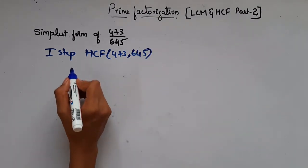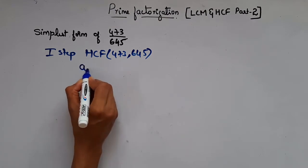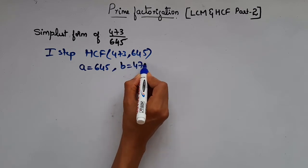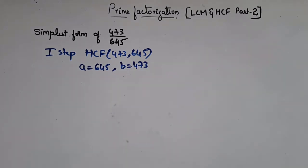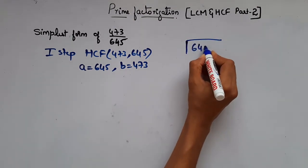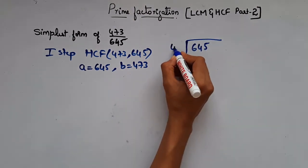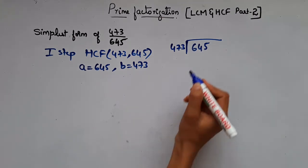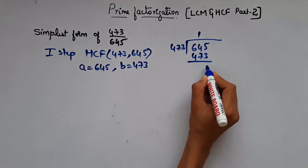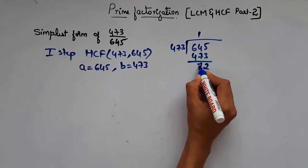That is 473 and 645. So we will use Euclid's division algorithm method, where a is your bigger number, that is 645, and b is 473. Now let's divide 645 by 473. So one times 473 leaves 172.